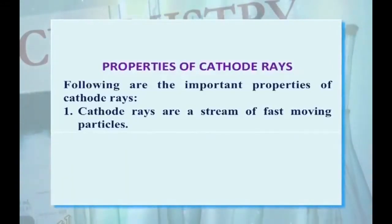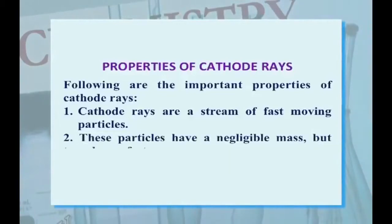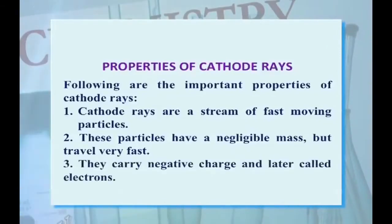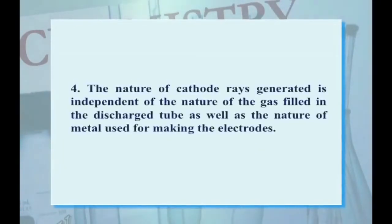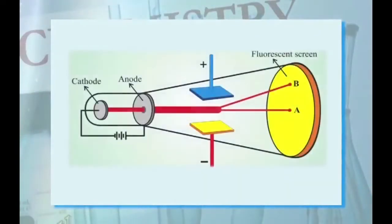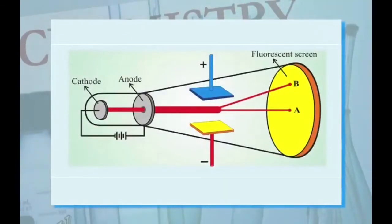Properties of cathode rays: First, cathode rays are a stream of fast-moving particles which have negligible mass but travel very fast. They carry a negative charge and are later called electrons. The nature of cathode rays generated is independent of the nature of the gas filled in the discharge tube as well as the nature of metal used for making the electrodes. The arrangement for production of cathode rays is shown here, where cathode rays pass through an electric field and their deflection is demonstrated.